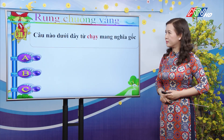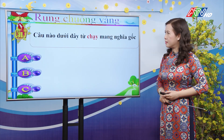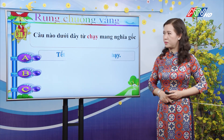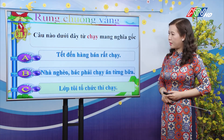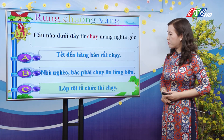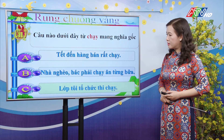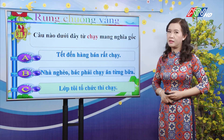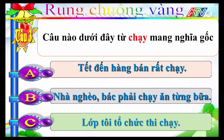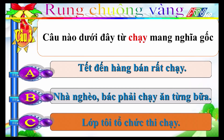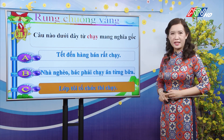Câu 3: Câu nào dưới đây từ "chạy" mang nghĩa gốc? A-Tết đến hàng bán rất chạy; B-Nhà nghèo bác phải chạy ăn từng bữa; C-Lớp tôi tổ chức thi chạy. Đáp án đúng là C: từ "chạy" trong câu "Lớp tôi tổ chức thi chạy" mang nghĩa gốc.